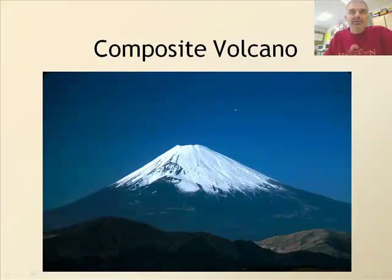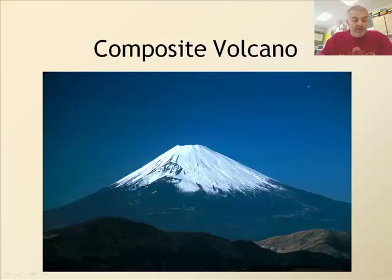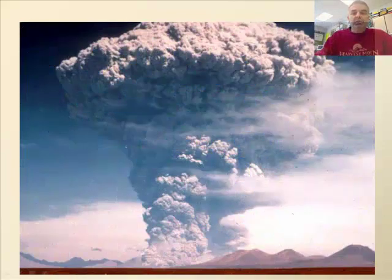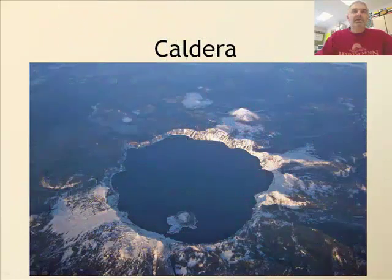The second type of volcano is called a composite volcano. This is what most people think of when they picture a volcano — they have very steep slopes, are very explosive, and have been built up over time. Mount Fuji, Mount St. Helens, and Mount Rainier are some examples. Here's Mount Fuji in Japan, and here's one exploding, and another from space.